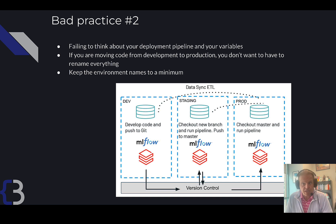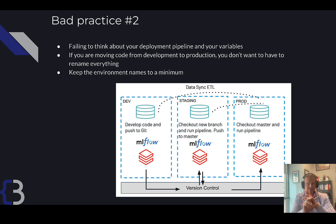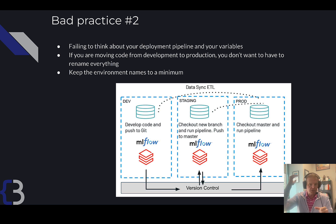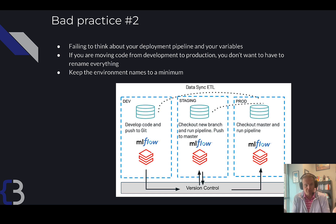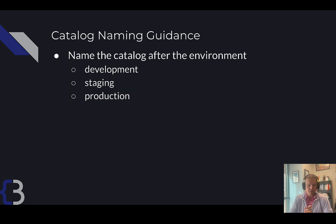That brings us to catalog naming guidance. I think you should name those catalogs development, staging, and production — that's it. Just name them after the environment. That means you're only using variables in your deployment pipelines for those things and only the full name, not some concatenation or amalgamation of those things. Can you do more things than that with your catalog? Sure, you can, and maybe you should. I'm just offering you some things to think about to get you started.